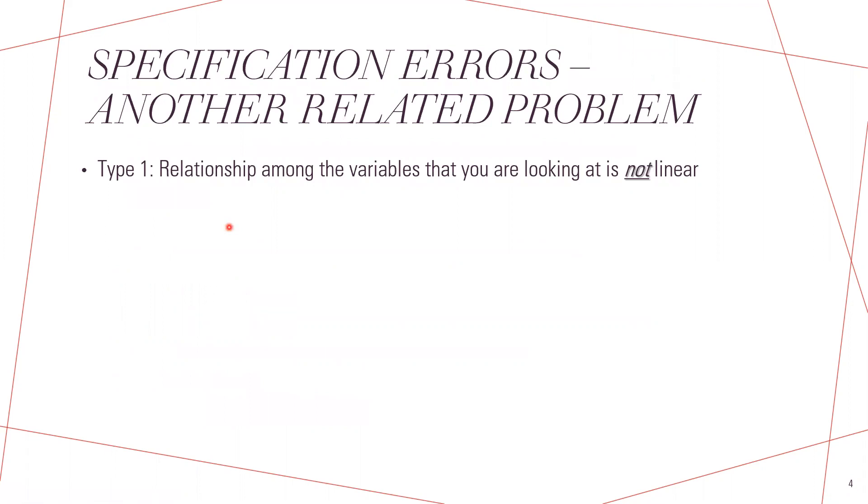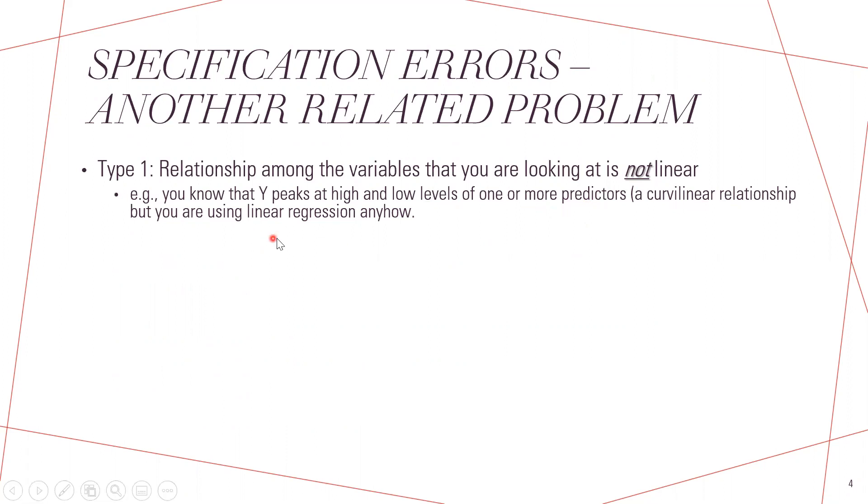The specification errors are of two types. The first is when the relationship among the variables are not linear. That is, when we are plotting the graph of Y and X, there would be a nonlinear effect or a curvilinear effect of both regressors.